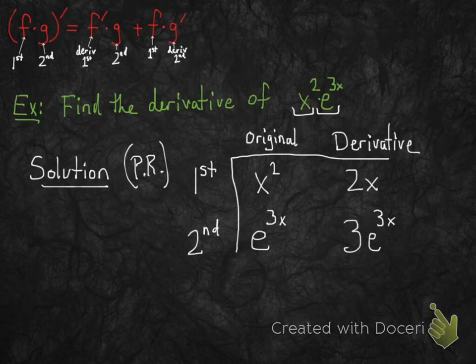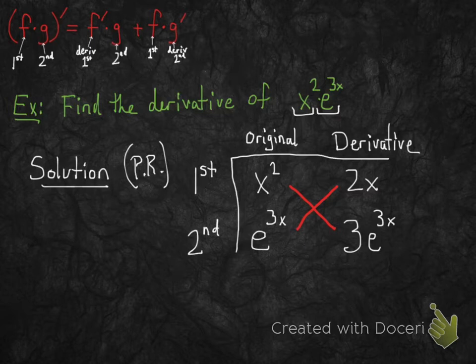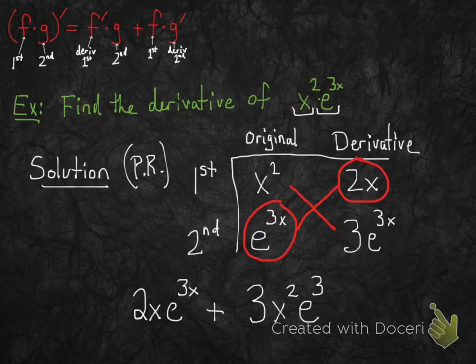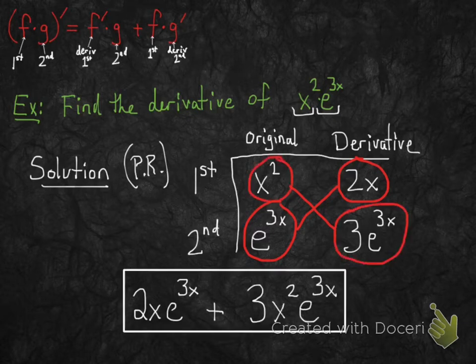Since we're using the product rule, I'm going to draw the old school symbol for multiplication, which is an x. This tells you exactly how to write your final derivative — just connect the two functions at the tips of the x. So 2x times e to the 3x is one of your components, and then plus x squared times 3e to the 3x.